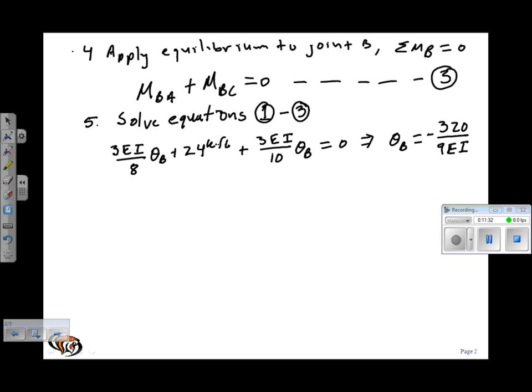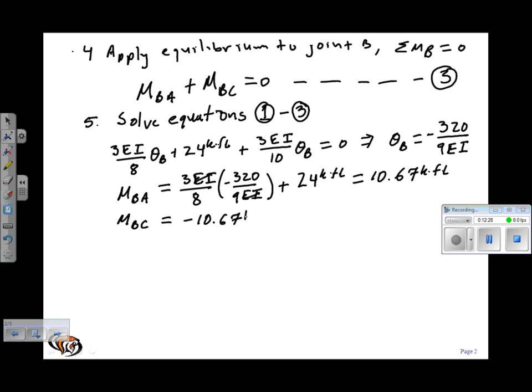Substituting theta B into equations one and two yields a moment M_BA equal to 3EI over 8 times negative 320 over 9EI plus 24 kip feet. EI's cancel, and so this gives me a 10.67 kip foot moment for B to A. Solving for B to C gives me negative 10.67 kip feet.